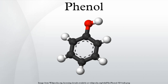Because of phenol's commercial importance, many methods have been developed for its production. The dominant current route, accounting for 95% of production, involves the partial oxidation of cumene via the Hock rearrangement: C6H5CH(CH3)2 + O2 → C6H5OH + 2CO. Compared to most other processes, the cumene hydroperoxide process uses relatively mild synthesis conditions and relatively inexpensive raw materials. However, to operate economically, there must be demand for both phenol and the acetone by-product.